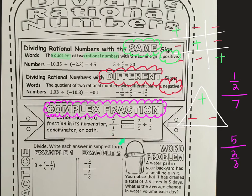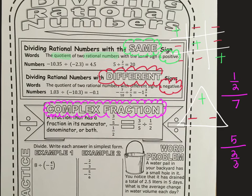Remember, the fraction bar means division. So three fifths divided by one half — you can change a complex fraction into a division problem. And then, just like we add the opposite when subtracting, we're going to multiply by the reciprocal. It's kind of another keep-change-change situation: keep this fraction the same, change this to multiplication, and change this to the reciprocal — or multiplicative inverse. Like add the opposite, the inverse: we're going to multiply by the inverse.